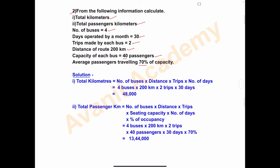Taking all this information, first we will calculate the total kilometers and then total passenger kilometers. Let's start the solution. To calculate total kilometers, the formula is: number of buses × distance × trips × number of days.